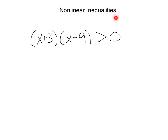We're going to be looking at how to solve non-linear inequalities. These are just more complex inequalities than we've done in the past. Here we have x plus 3 times x minus 9 is greater than or equal to 0. The important thing to note is that all positive numbers are bigger than 0 and all negative numbers are less than 0. So since we want to be greater than 0, we want to find out where these numbers are going to be positive, and how we do that is we set ourselves up with a number line and a chart.